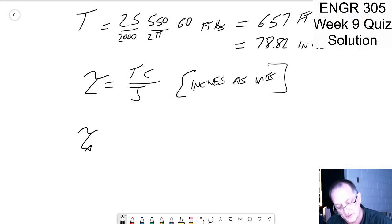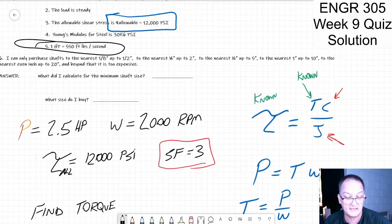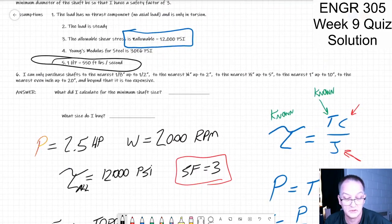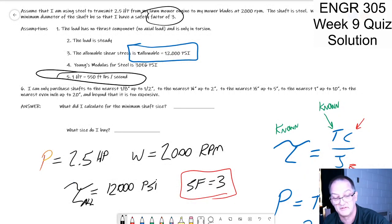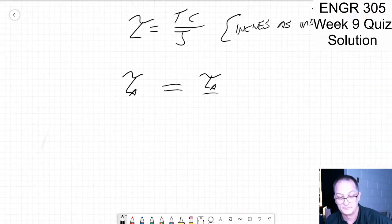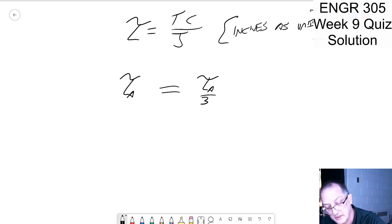All right then I've got my allowable stress. Well there's a safety factor. So it's really t allowable over my safety factor was three. Oh I can't find it. Oh there you go. I want a safety factor of three, so the shear stress is the torque allowable over three. So that's four thousand psi is equal to